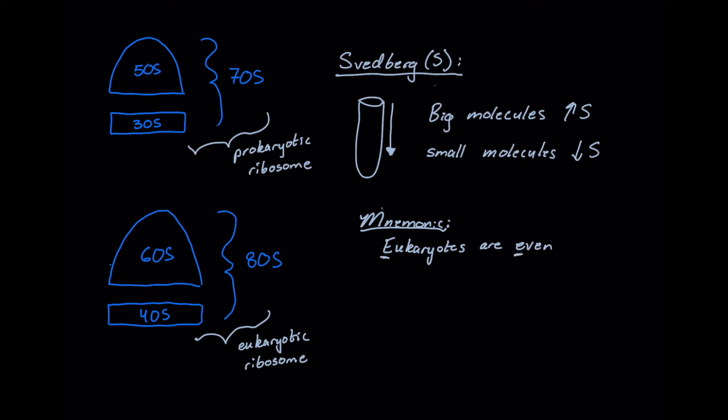And then one that's kind of funny too is prokaryotes are odd. And you could also use prime for this if you'd like. So the 3, 5 and 7 are all prime numbers. I kind of like odd though because 3, 5 and 7 are odd numbers even though 30, 50 and 70 aren't. Also prokaryotes are kind of weird and odd in general. Bacteria look kind of strange.